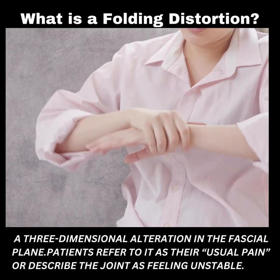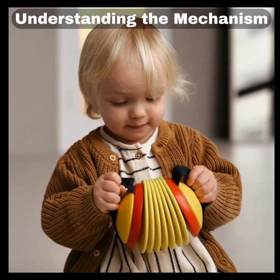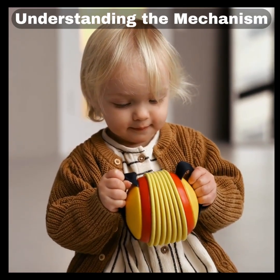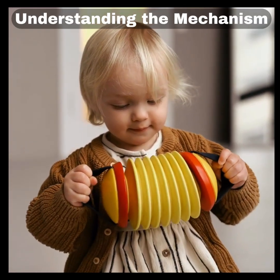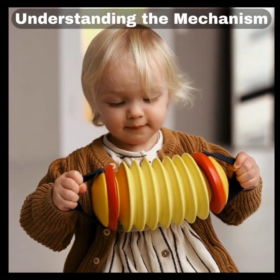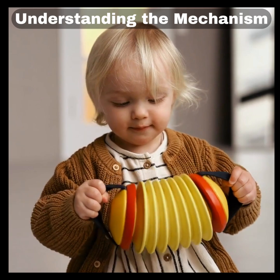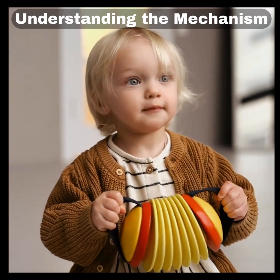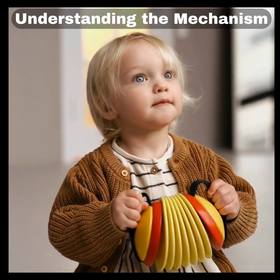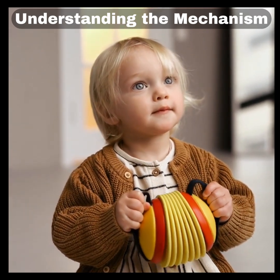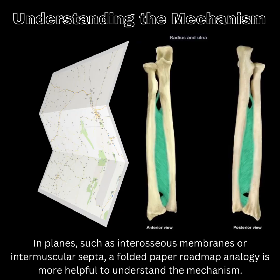Understanding the mechanism: Fascia in joints works like an accordion, opening and closing smoothly. A folding distortion occurs when this movement gets stuck, either in an open or closed position, similar to a road map being twisted and folded incorrectly.